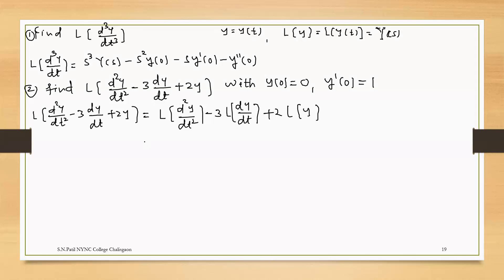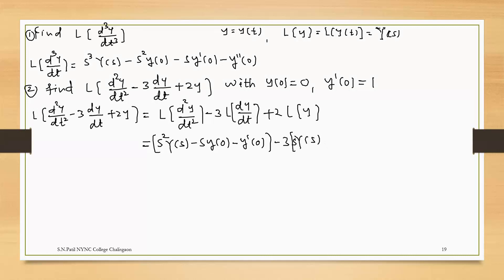Applying the property of Laplace transform of derivatives: the second-order term gives s²·Y(s) − s·y(0) − y'(0); minus 3 times the first-order term gives −3·[s·Y(s) − y(0)]; plus 2 times the Laplace of y, which is Y(s).